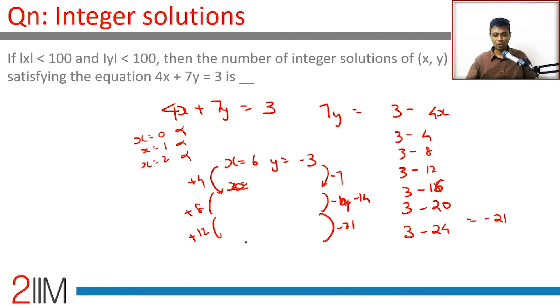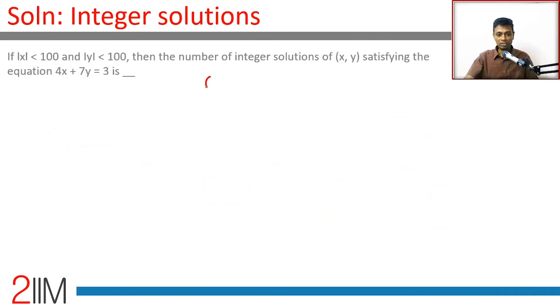When will that happen? x is 6 works. After 6, 6 plus 7 is 13 will work. y should be minus 3 minus 4, so minus 7. So x is 13: 4 into 13 plus 7 into minus 7 - 52 minus 49 is 3. Now we have got ourselves a pattern, brilliant!